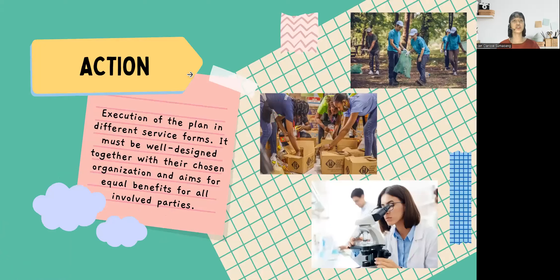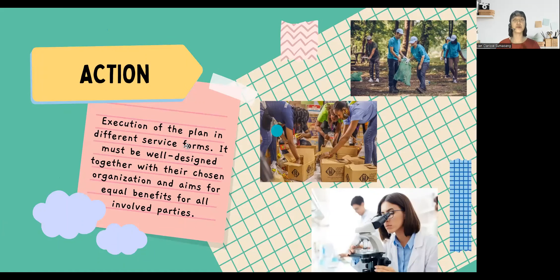Next is action. When we say action, it is the execution of a plan in different service forms. It must be well designed together with their chosen organization and aims for equal benefits for all involved parties. The different service forms include direct service, indirect service, advocacy-based, and research-based.